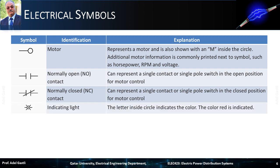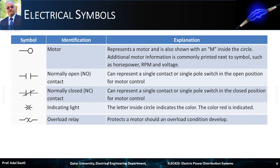The next symbol represents a light indicator. The letter inside the circle indicates the color. The red color is indicated here with a letter R. The next symbol represents an overload relay, which protects a motor should an overload condition develop. The next symbol represents a variety of capacitors. Capacitors are usually used in the distribution system to compensate for the reactive power and regulate the voltage.